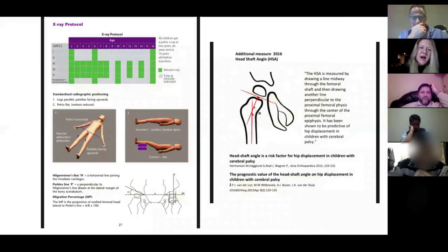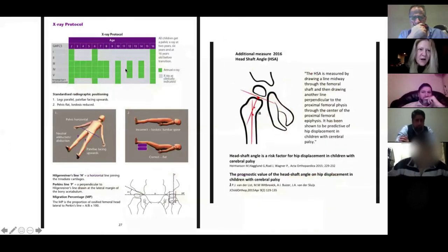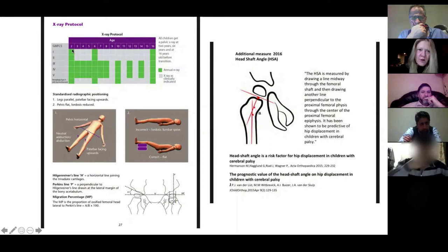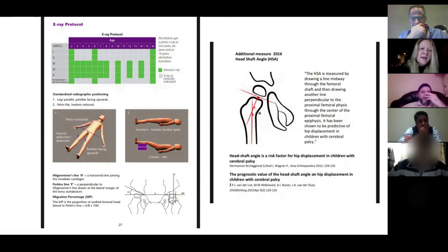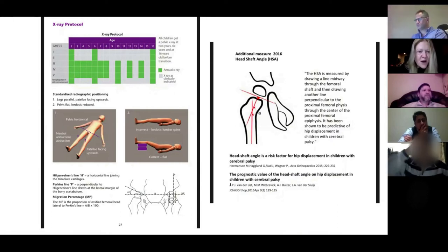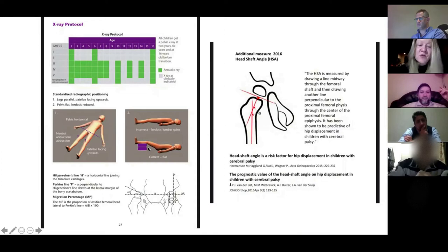According to the CPIPS guidelines, the X-ray protocol varies by GMFCS level. GMFCS levels one and two are X-rayed at age two, six, and skeletal maturity. For levels three, four, and five, X-rays are done once or twice a year. It's important that the X-ray department modifies patient positioning for these children, as their flexion deformities and lordotic lumbar spine will give incorrect measurements if not accounted for.